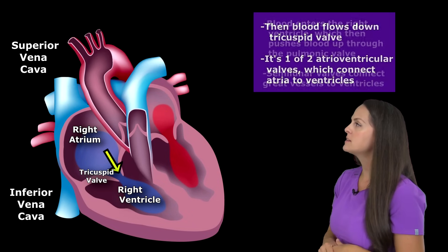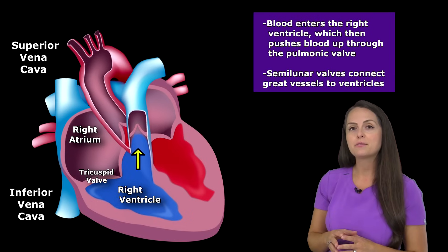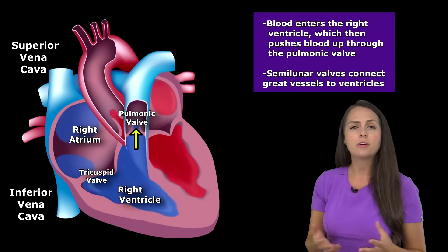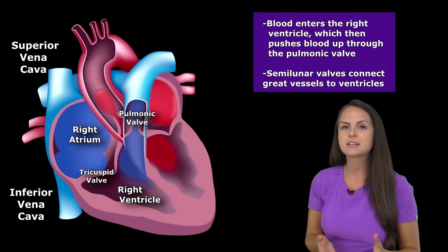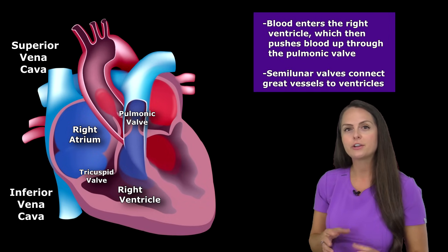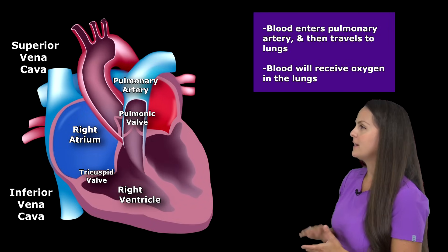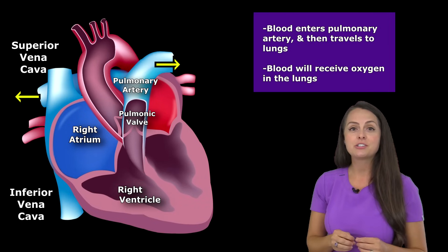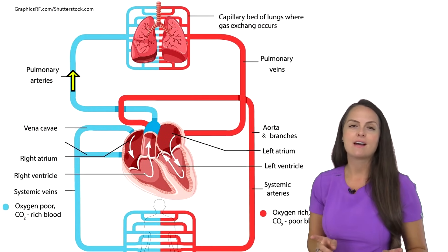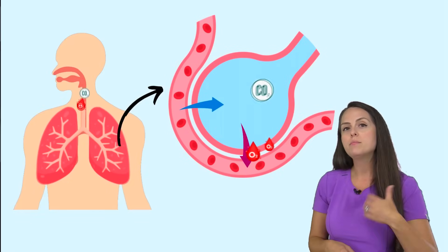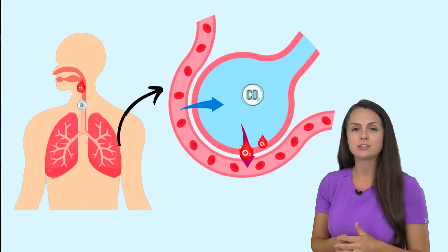Once it flows down through the tricuspid valve, it's going to go into the right ventricle. The right ventricle is going to push the blood up through another valve known as the pulmonic valve, or pulmonary valve. This is one of two semilunar valves, and your semilunar valves connect your great vessels to the bottom chambers of your heart, your ventricles. That blood flows up into the pulmonary artery, which takes this deoxygenated blood away from the heart and sends it to the lungs, where your lungs remove that excessive carbon dioxide that you exhale and replenish it with oxygen.